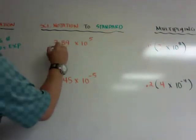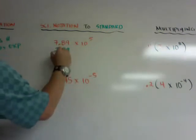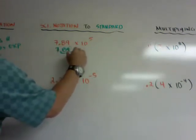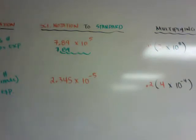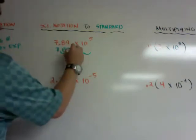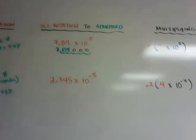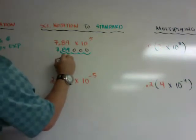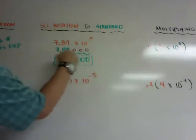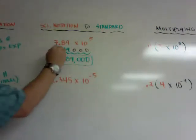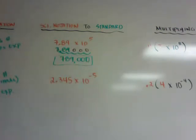If I'm going from standard to scientific, if I rewrite it as 7.89, I need to go 5 units: 1, 2, 3, 4, 5. What you want to do is put a 0 in each hook that you created. But be careful, you need to rewrite the answer as 7, 8, 9, 0, 0, 0. Rewrite it. Don't leave all those numbers there because it looks like the decimal is still there.